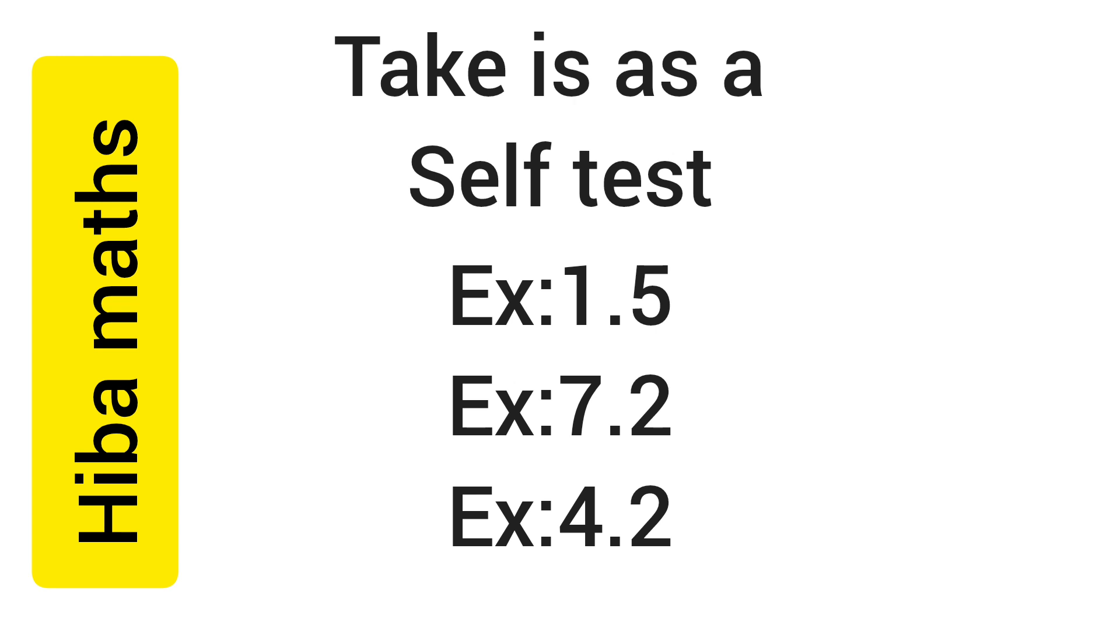If the radius of 2 spheres is 4 to 7, find the ratio of their volume. We have to look at the 10th question.